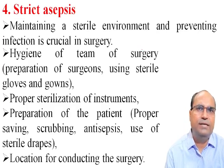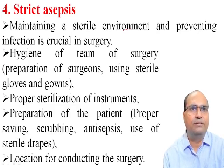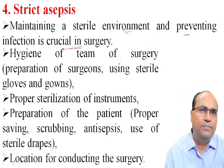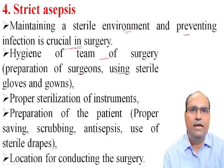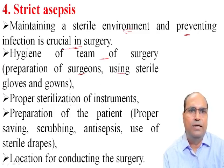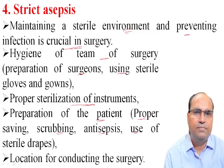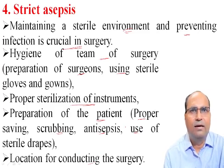The fourth principle of Halstead is strict asepsis. Maintaining a sterile environment and preventing infection is crucial in surgery. This includes hygiene of the operating area, preparation of the surgeon, using sterile gloves and gowns, proper utilization of instruments, and preparation of the patient by proper shaving, scrubbing, antisepsis, and use of sterile drapes. We should maintain strict aseptic conditions during surgery.